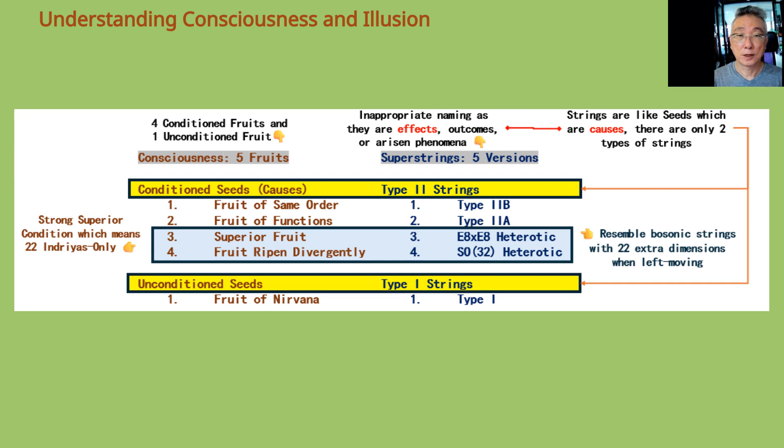We have learned that five superstrings are five fruits in Buddhism. Superstring is not quite an appropriate name for them, as they are really effects, outcomes, solutions, or arisen phenomena, as the results of two types of strings.